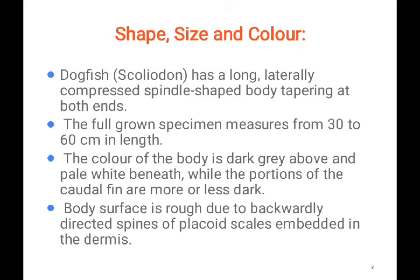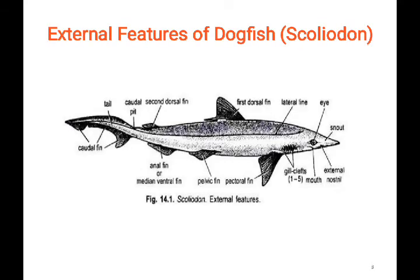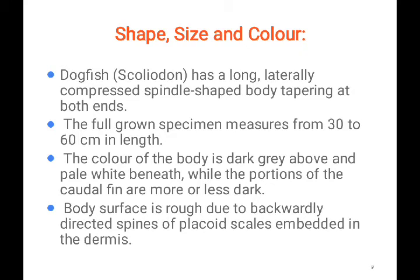When we look at the external features, we focus on shape, size, and color. The body is long, laterally compressed, and spindle-shaped, tapering at both ends. As you can see in the diagram, it narrows at both ends. The full-grown specimen measures from 30 to 60 centimeters in length. The body is dark above in the dorsal region, while the beneath region is white.